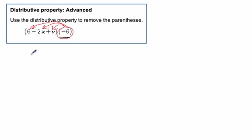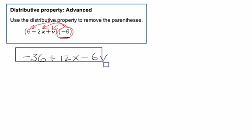We've got a negative 6 times a 6. That's a negative 36. We've got a negative 6 times a negative 2x. That's a positive 12x. And then a negative 6 times a positive v. Makes a negative 6v. And that's it. We're done with our answer. Okay, have fun.